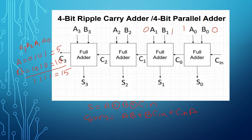Here I am assuming the initial carry C_in as 0. Now I am going to find out the sum of the first full adder. We need to perform XOR of A, B, and C_in: 1 XOR 0 is 1, and 1 XOR 0 is 1 again. So S0, the sum, is 1.